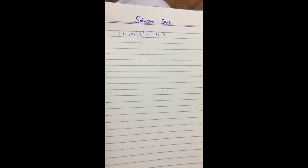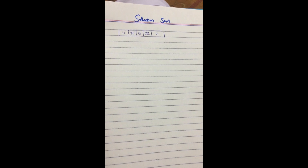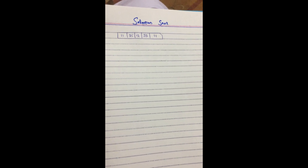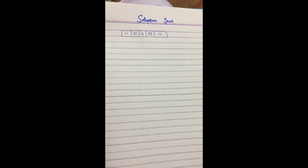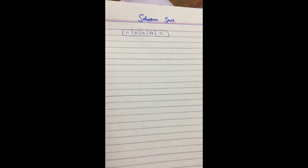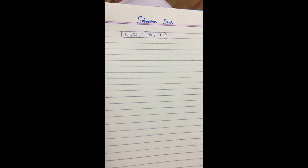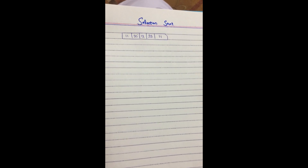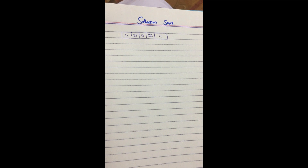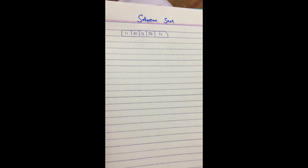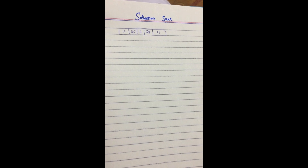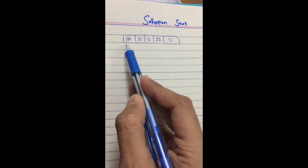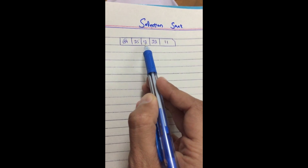First, the smallest element is selected from the unsorted array. We select the smallest value in the whole array and place it on the left side. This process continues, moving the unsorted array boundary one element to the right. Let's consider this example: 64, 25, 12, 22, 11.